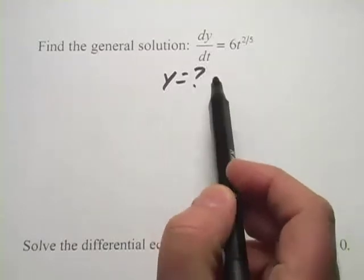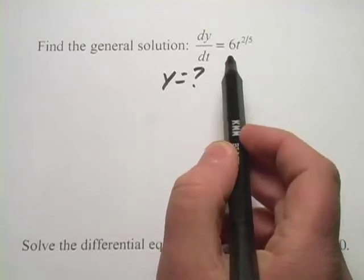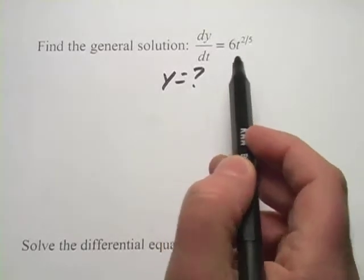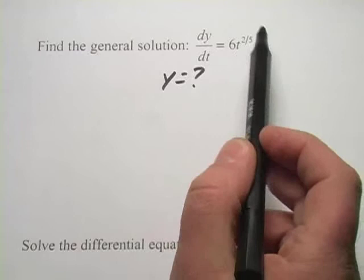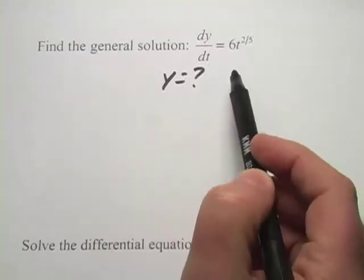And basically what we're going to do is undo the power rule. You know, the power rule, when you're doing the power rule, you take the power and multiply it out front, so it becomes a constant out front, and then you reduce the power by one.